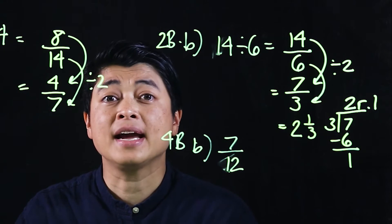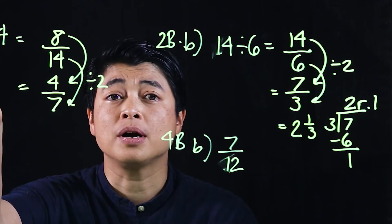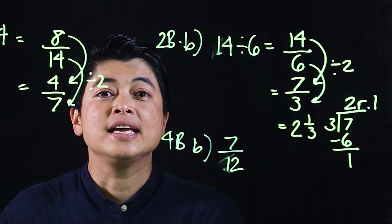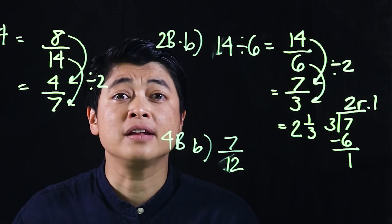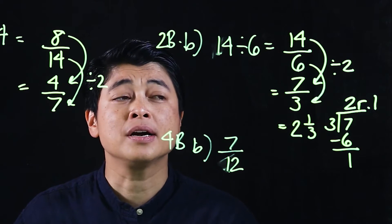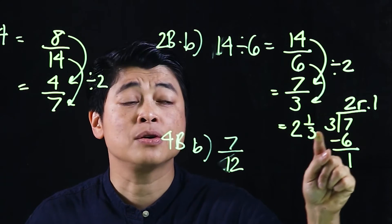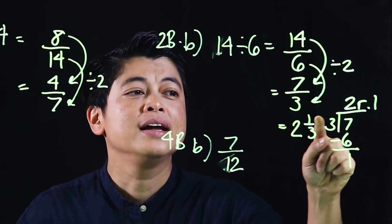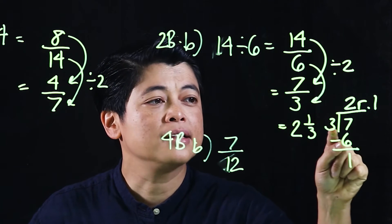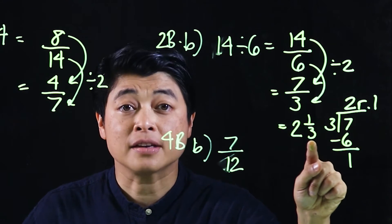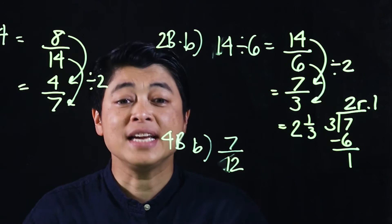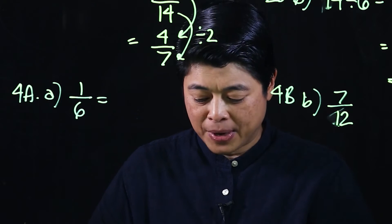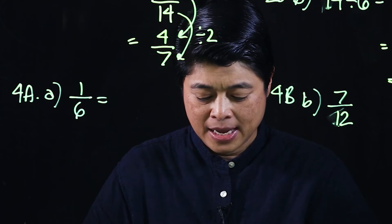So the remainder becomes the numerator of the fraction, meaning 7 over 3 equals 2 and 1 over 3. As stated at the beginning, any division problem can be expressed as a fraction — the quotient is the whole number, the remainder is the numerator, and the divisor is the denominator. Now proceeding to page 59.